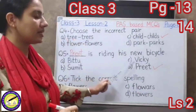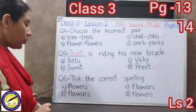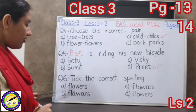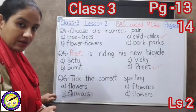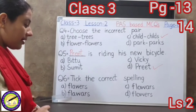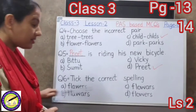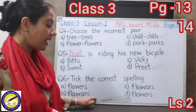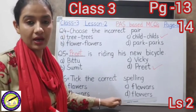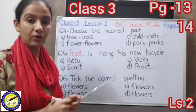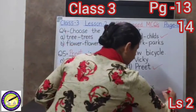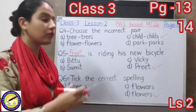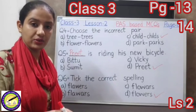The sixth question is: pick the correct spelling of 'flowers'. The options are: A — F-L-A-W-E-R-S, B — F-L-A-W-A-R-S, C — F-L-O-W-A-R-S, D — F-L-O-W-E-R-S. The correct spelling of flowers is F-L-O-W-E-R-S, option D. Children, you will revise all these questions at home. Thank you.